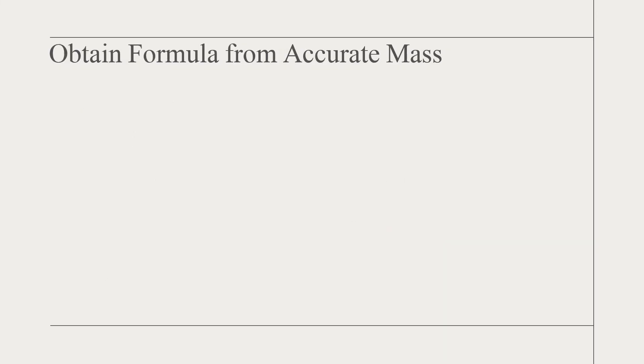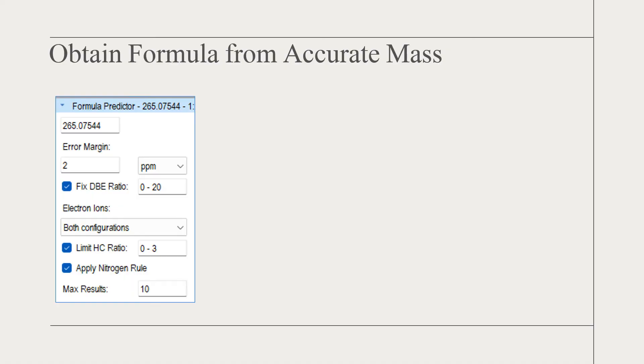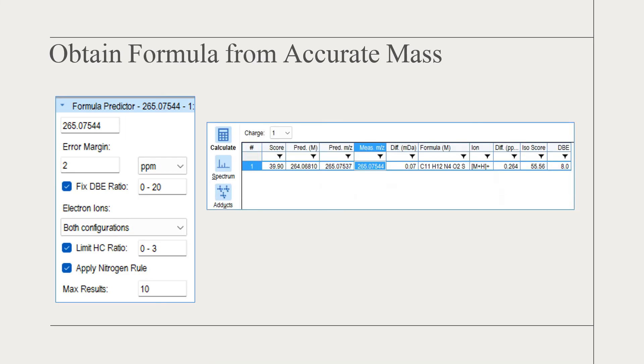What additional information can we obtain from such an accurate measurement of the molecule? Assuming it is an unknown compound, that means we do not know the elemental composition or chemical formula. The accurate mass measured can help us to obtain the chemical formula. A software called Formula Predictor can be used for calculating the most likely chemical formula. After parameter setting, click calculate, and then a formula candidate is obtained.